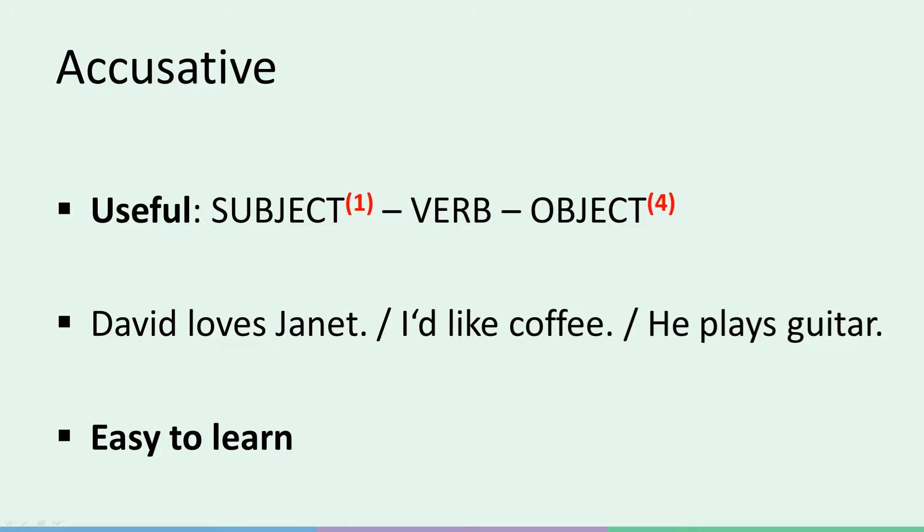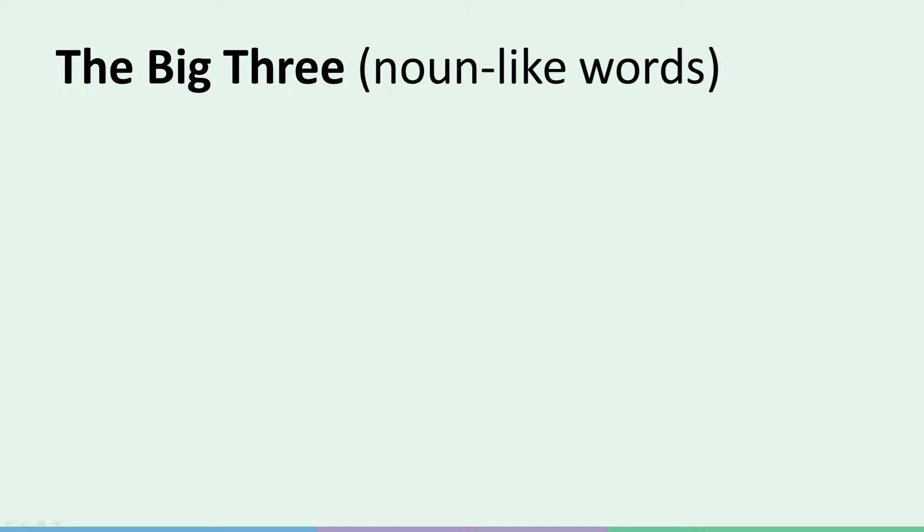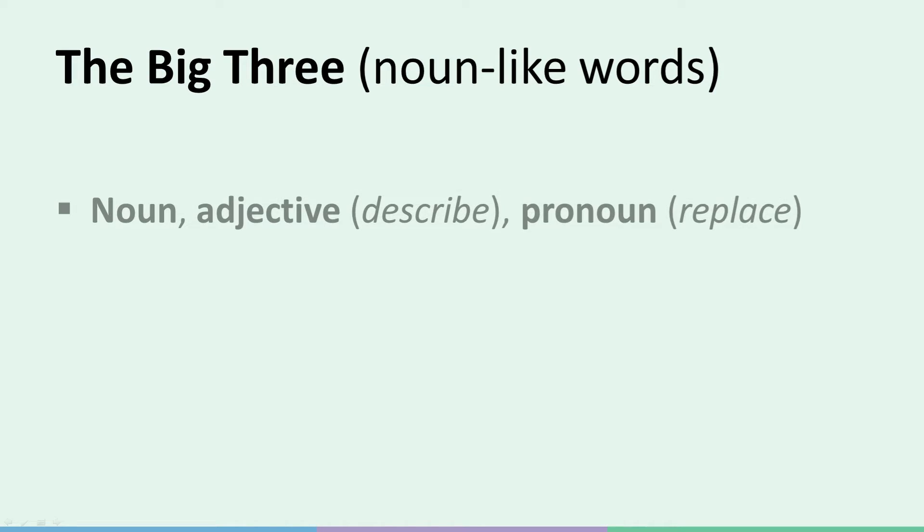The aim of today's lesson is to show why it's easy to learn and how to go about learning it. First, let's review one final thing before dealing with the case endings themselves: what we can call the big three of nouns and noun-like words. By noun-like words, we mean nouns — words like house, garden, garage — adjectives, because they describe nouns, which are words like big, small, expensive, and pronouns, because they replace nouns, so words like he and she instead of Neil or Vanessa.